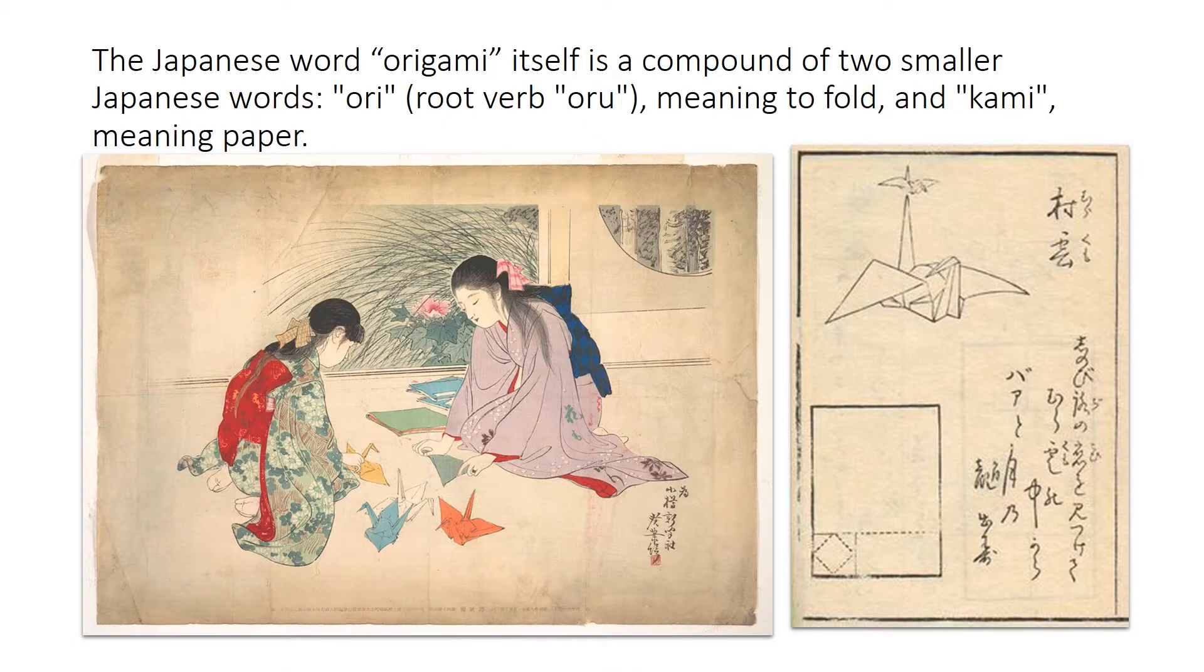The Japanese word origami itself is a compound of two smaller Japanese words: ori, root verb oru, meaning to fold, and kami, meaning paper.